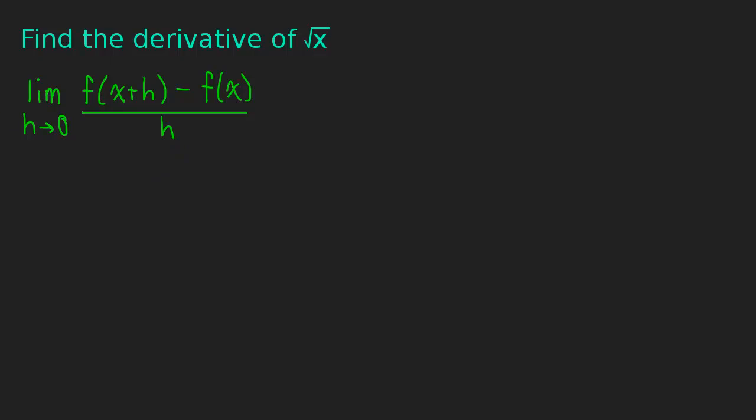Okay, and all we're going to do is plug in these values into the function. So this will be the limit as h approaches zero of the square root of x plus h. So I plugged in x plus h into the function minus the square root of x, just the function itself. All divided by h.